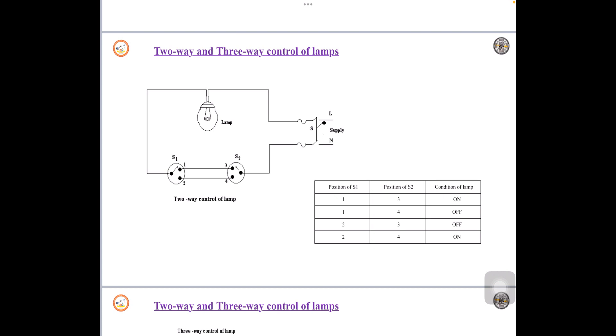So here you have 2 switches. You can see here switch 1 S1, switch 2 S2 and a lamp, and it is given to a supply line and neutral with a switch.